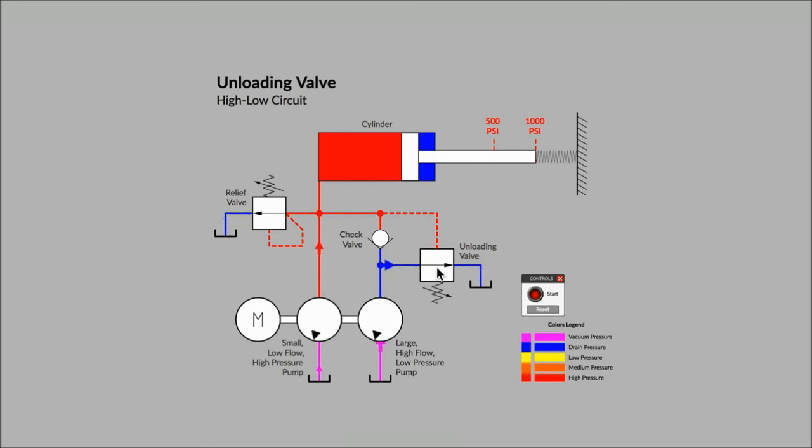This has been a brief introduction to the unloading valve. If you use several fixed displacement pumps in your hydraulic system, have a look at the schematic to see if one of the symbols looks a little like a relief valve and has a check valve on the pilot line. Then you'll know you've got an unloading valve.